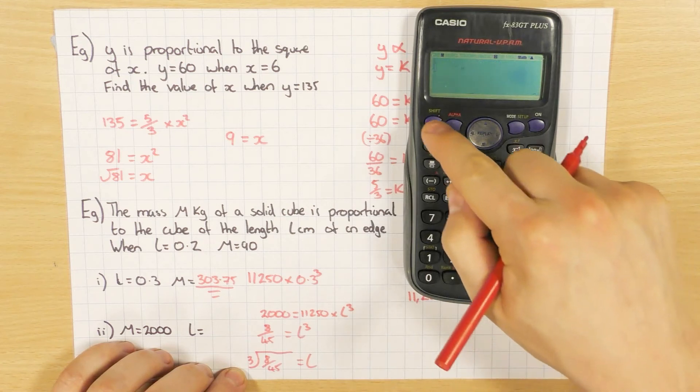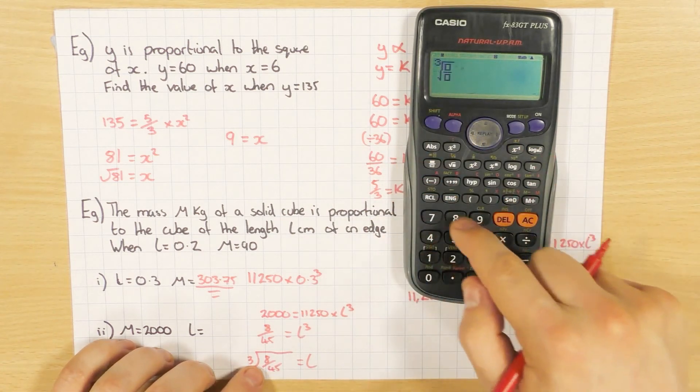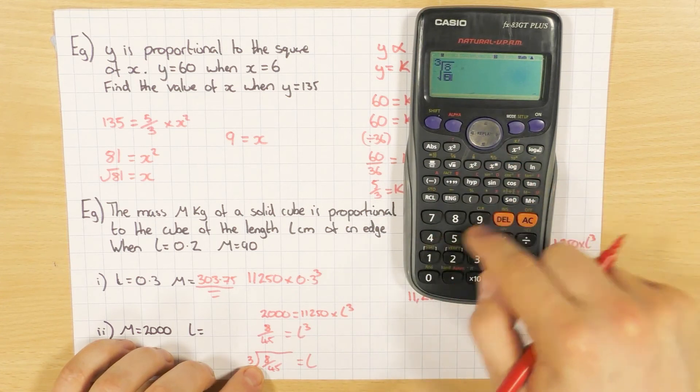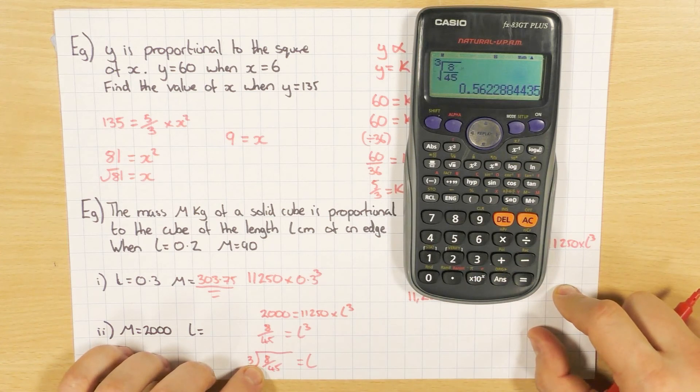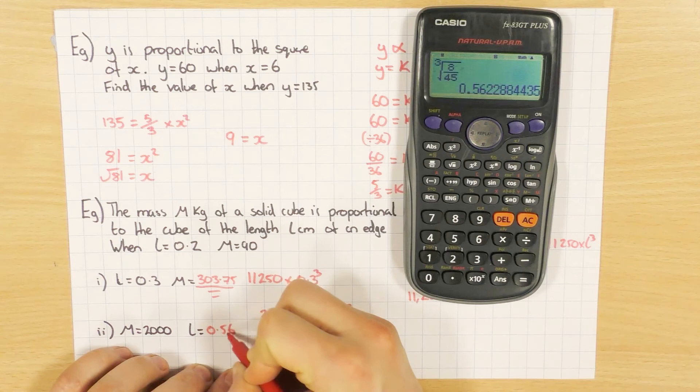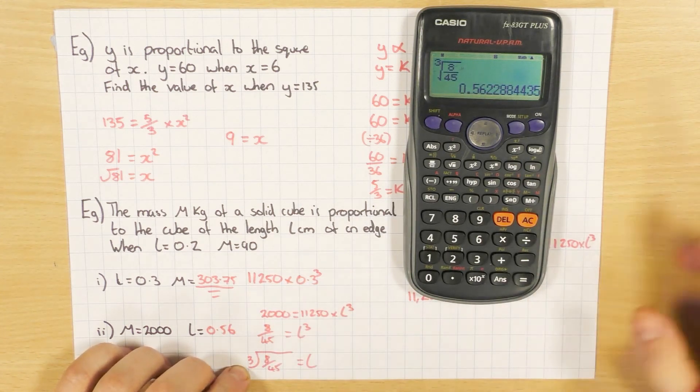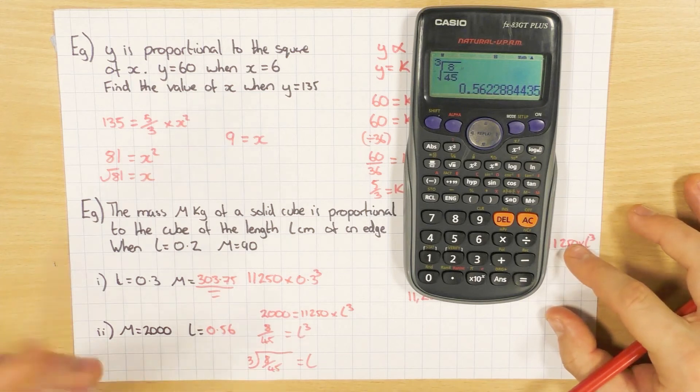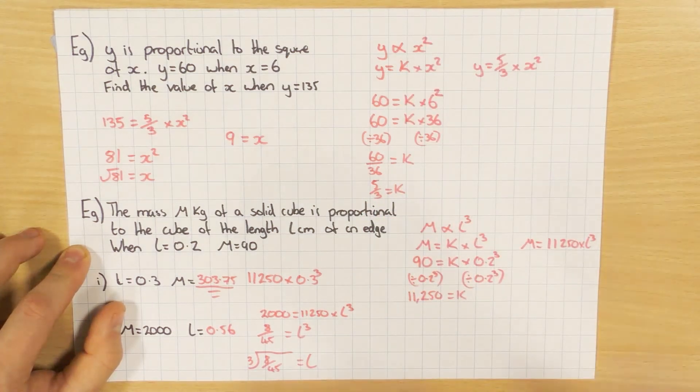So the cube root, if I press shift and the square root button, there's my cube. Excellent. And I want to cube root 8 over 45. Oh, that's horrible. Let's round that to two decimal places and say 0.56. Obviously the question, it might tell you to round it to something else or significant figures or decimal places. In this one, I'm just going to round it to two decimal places. So that's an example of a cube. That's an example of a square.